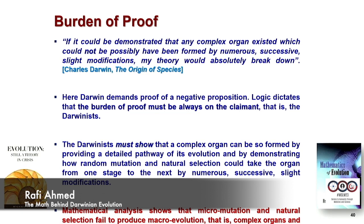Mathematical analysis shows that micromutations and natural selection fail to produce macroevolution. This book was written by Fred Hoyle, an eminent astrophysicist and fellow of the Royal Society. He has essentially done what Darwin was asking for, but using mathematical analysis.